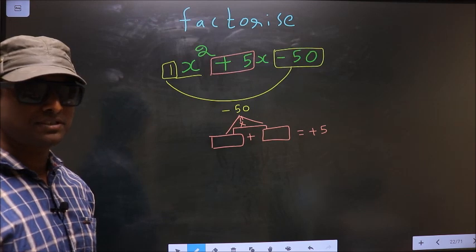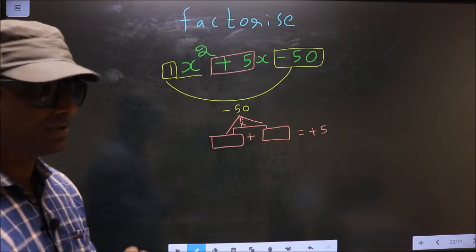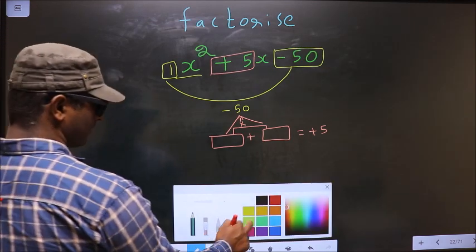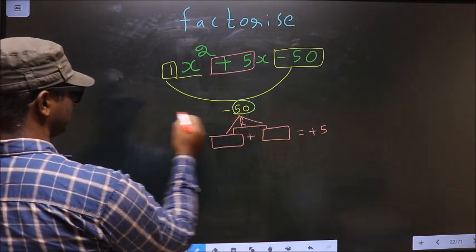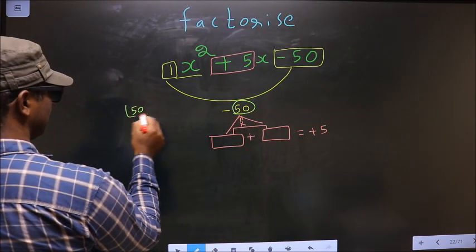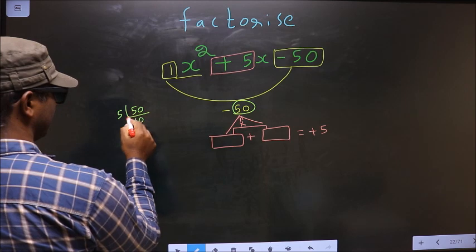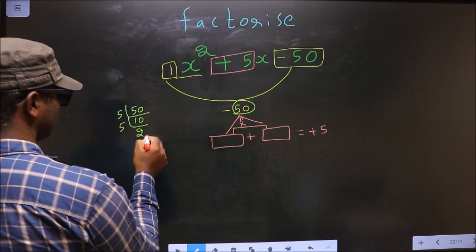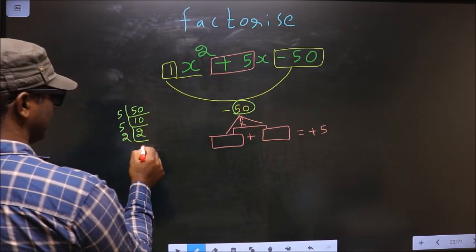To get those two numbers we should take LCM of 50. So I start with 5, 10. Again 5, 2. Now 2 and 1.